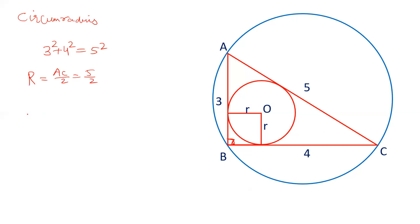And if the triangle is not a right angle triangle, then the radius of circumcircle can be calculated by A into B into C upon 4 into area of triangle.